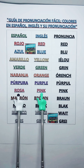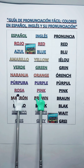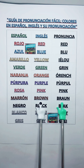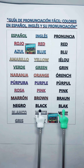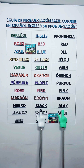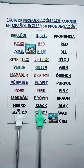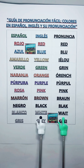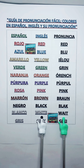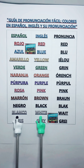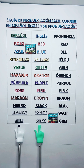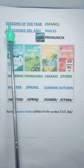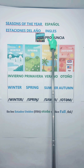Pink. Brown. Black. White. Gray. Aprende las estaciones del año en inglés.